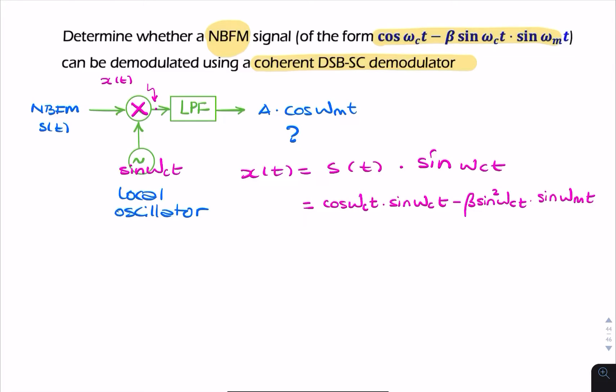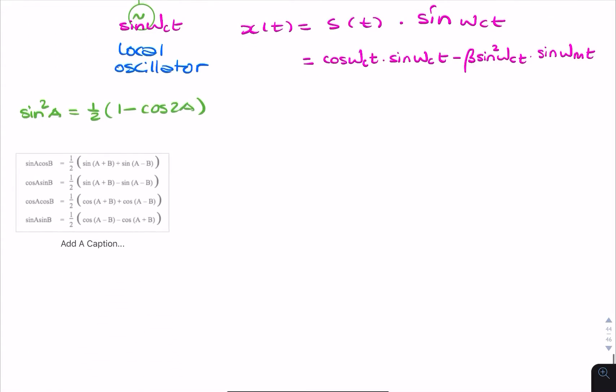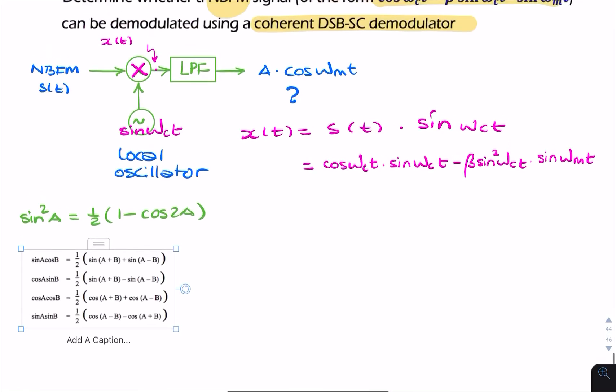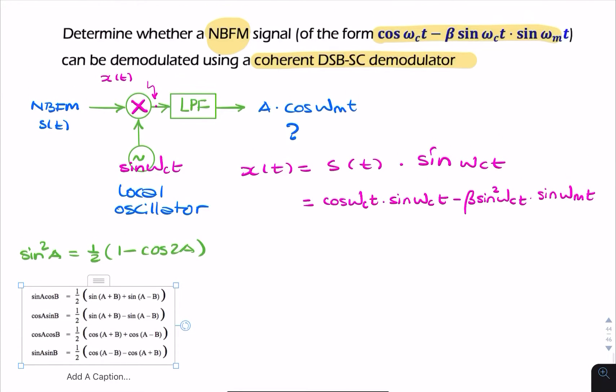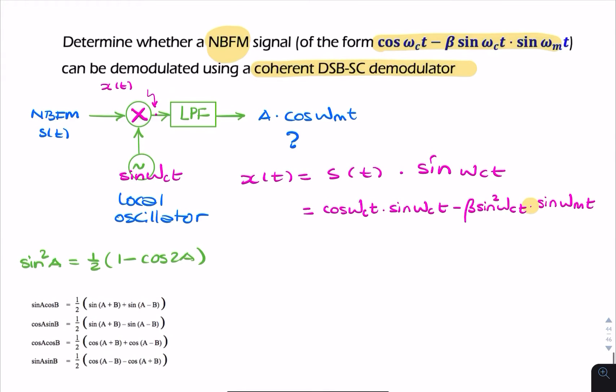So now there's a little bit of trig to unpack. Let me remind you of two things. That sin²A can be written in terms of cosine of a double angle: ½(1 - cos 2A). And let me bring this up. That will help us deal with this product here.